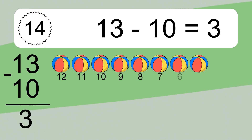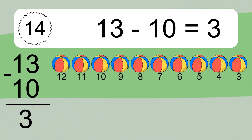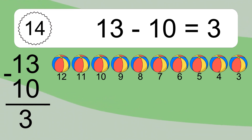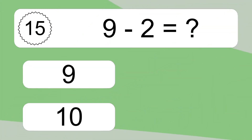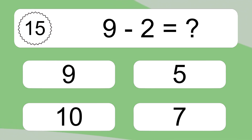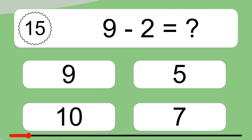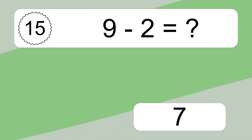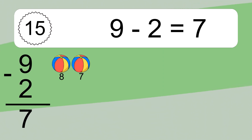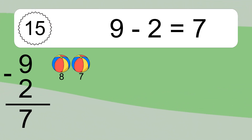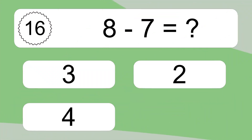13 minus 10 equals 3. Let's count it: 12, 11, 10, 9, 8, 7, 6, 5, 4, 3. 9 minus 2 equals what? 9 minus 2 equals 7. Let's count it: 8, 7.